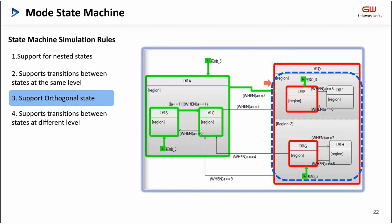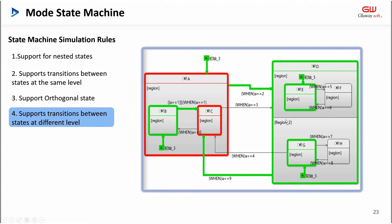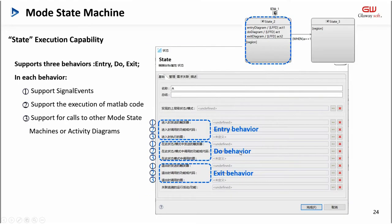Fourth, we support the direct transition between different levels. When the state transitions across the level, we can ignore the restriction of the starting point in the state. As shown in the figure, it can transit directly from state G to state C instead of state B. There is a set of very complicated execution sequence rules, but they are in line with SysML state machine specification. If you are interested, you can refer to SysML.